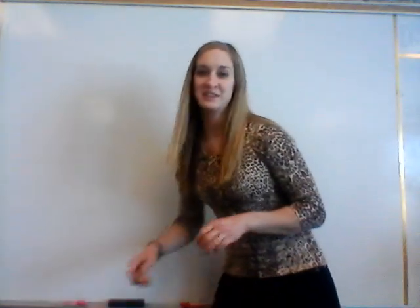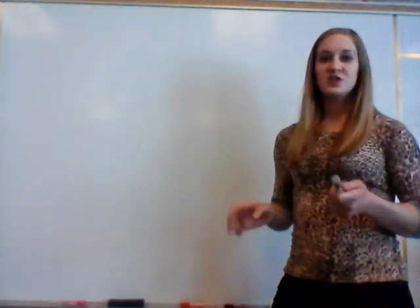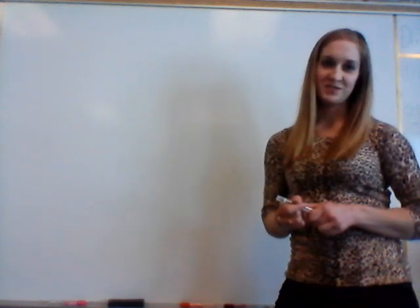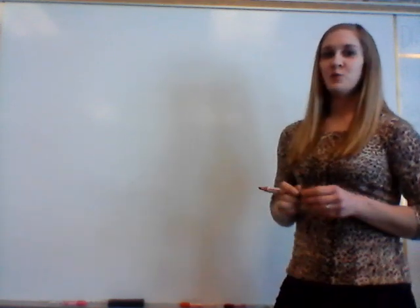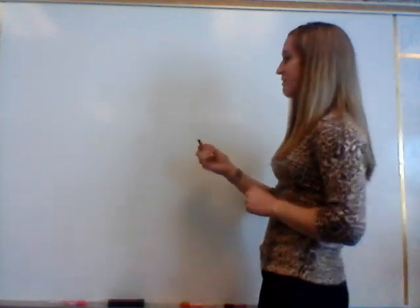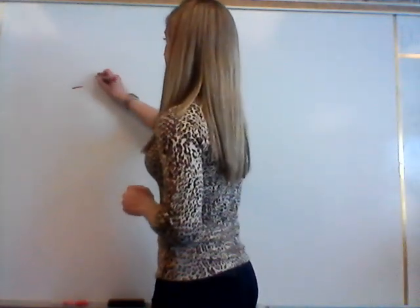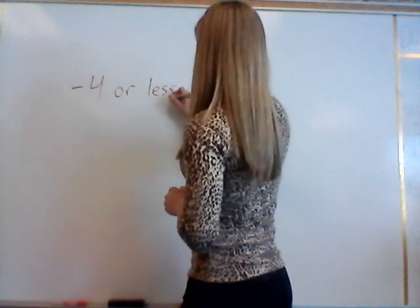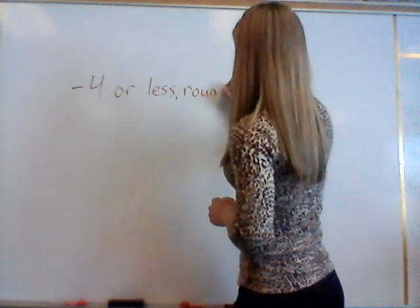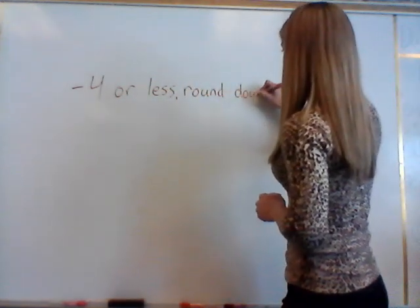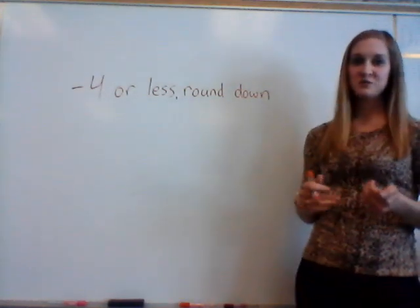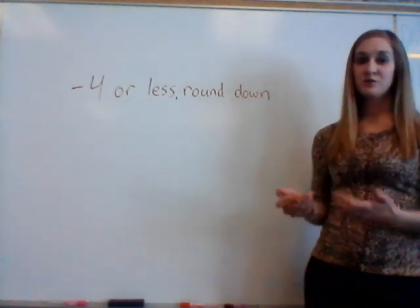The first thing I'm going to talk about with decimals is rounding decimals. This is just like rounding whole numbers — the only difference is there are decimals. Our two rounding rules are: if the number to the right of the decimal is four or less, we round it down.